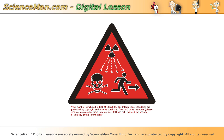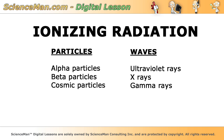So what exactly is ionizing radiation? Well, the first thing we need to know is that it comes in two forms: particles and waves. The particles are alpha particles, beta particles, and cosmic particles. And the waves are ultraviolet rays, x-rays, and gamma rays.